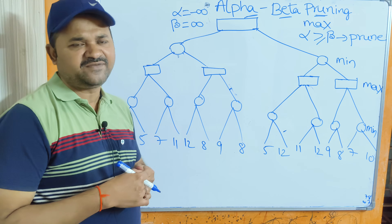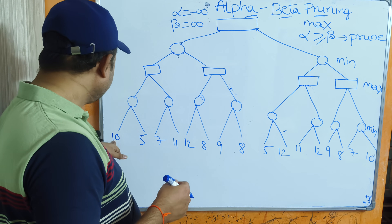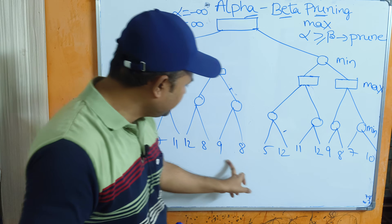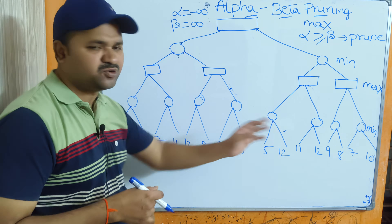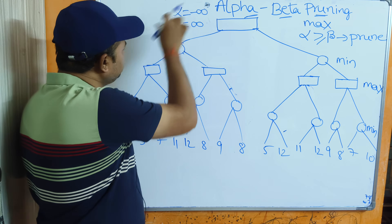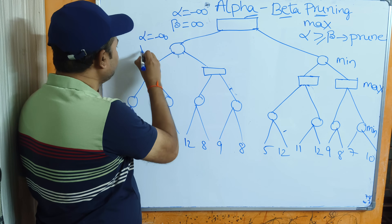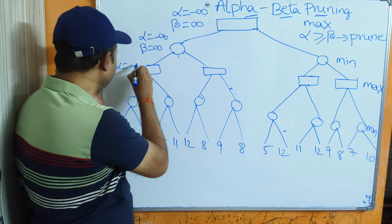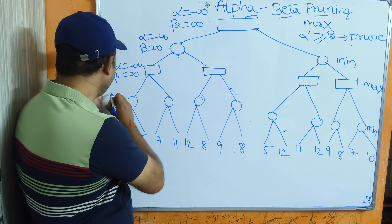In DFS we start at the root node and traverse until we reach the deepest nodes. Path by path, we explore all nodes, passing the information alpha = minus infinity and beta = infinity to each child node.